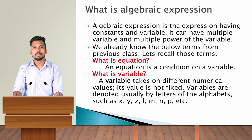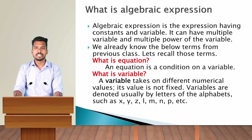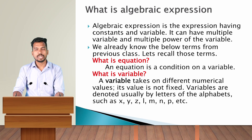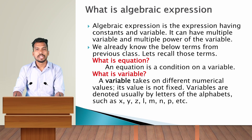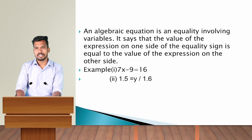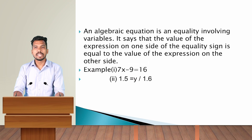Algebraic expressions can have multiple variables and multiple powers of variables. We already know these terms from the previous class. An equation is a condition on a variable. A variable takes on different numerical values — its value is not fixed. Variables are usually denoted by letters of the alphabet such as x, y, z, l, m, n, t, etc.